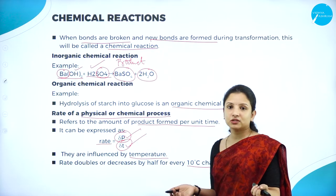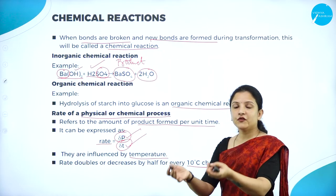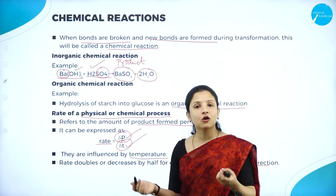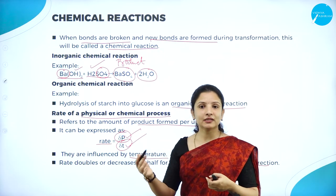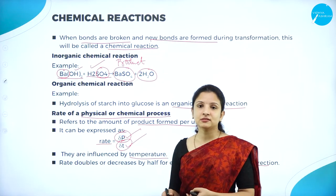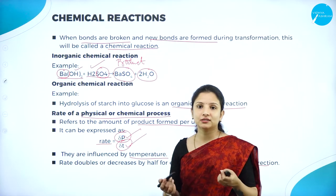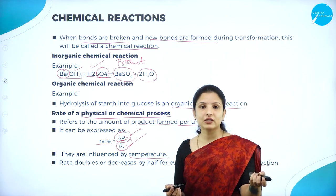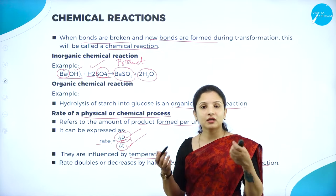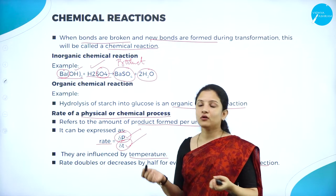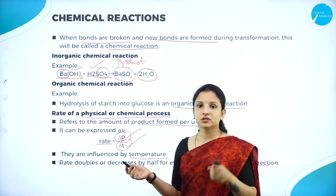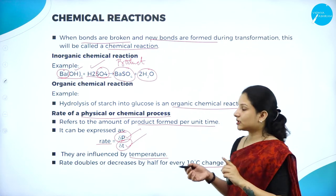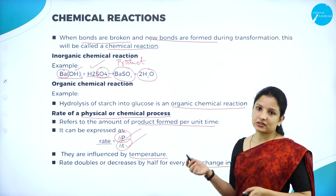Temperature is one of the important factors affecting the rate of both physical and chemical processes. Whether it is a physical process like melting of ice or a chemical reaction in a lab, temperature alters the rate of the reaction.